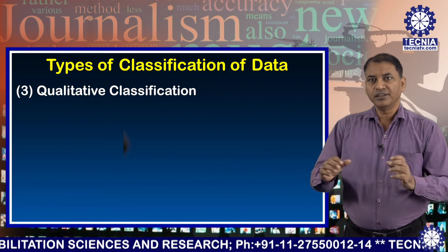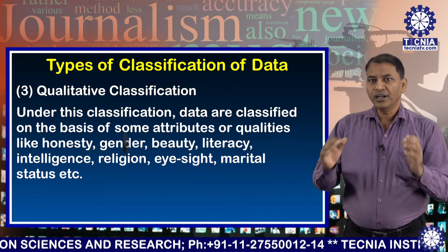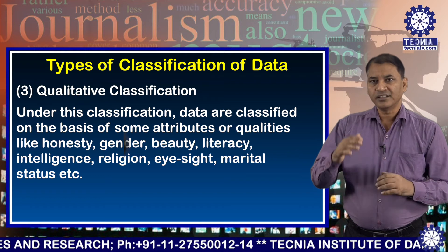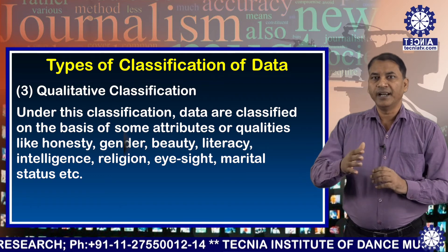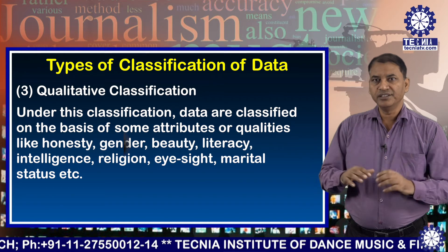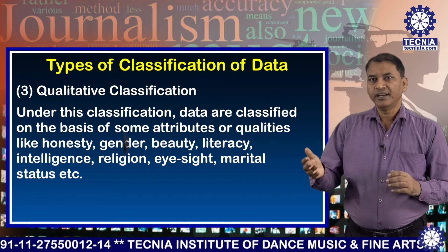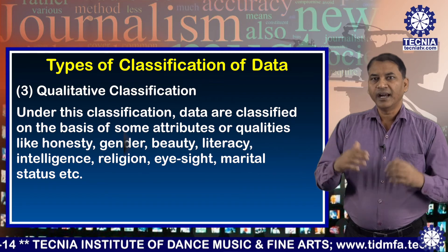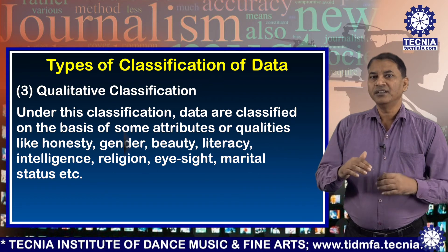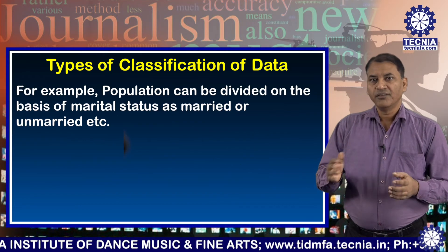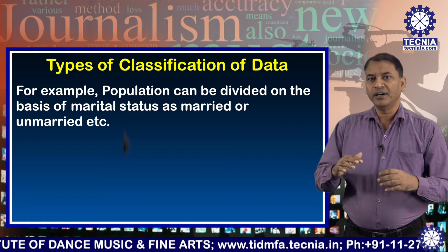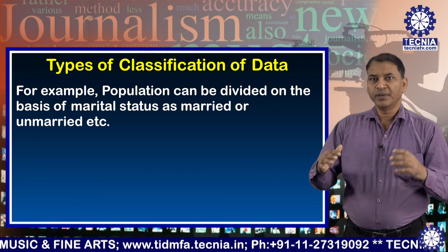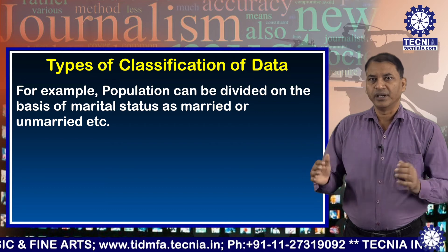Number three: qualitative classification. Under this classification, data are classified on the basis of some attributes or qualities like honesty, gender, beauty, literacy, intelligence, religion, eyesight, marital status, etc. For example, population can be divided on the basis of marital status, as married or unmarried, etc.